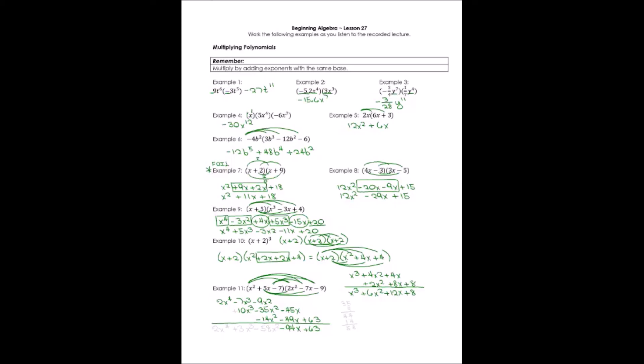Adding the x squared terms — all negative: 9 plus 35 gives 44, plus 14 gives 58, so negative 58x squared. Then negative 7x cubed plus 10x cubed gives positive 3x cubed. And 2x to the 4th has nothing to combine with. So I end up with 5 terms, and the highest degree is 4.